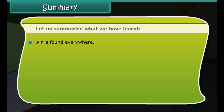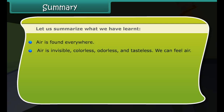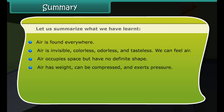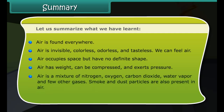Summary: Let us summarize what we have learned. Air is found everywhere. Air is invisible, colorless, odorless, and tasteless. We can feel air. Air occupies space but has no definite shape. Air has weight, can be compressed, and exerts pressure. Air is a mixture of nitrogen, oxygen, carbon dioxide, water vapor, and a few other gases. Smoke and dust particles are also present in air. Oxygen supports burning and is essential for all living organisms.